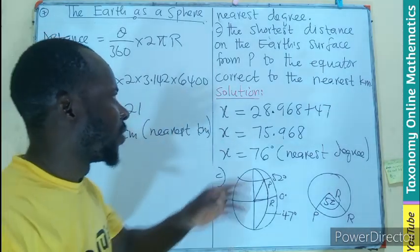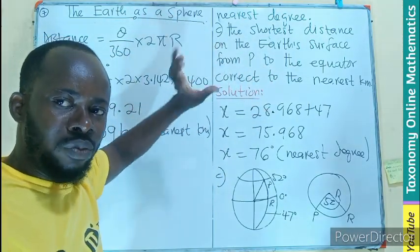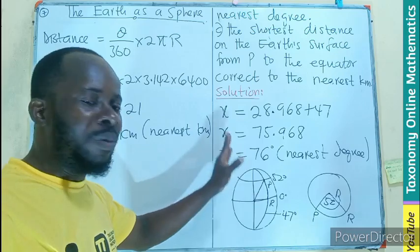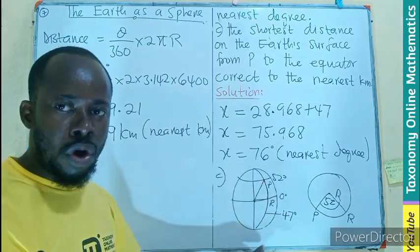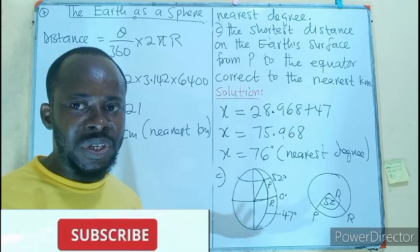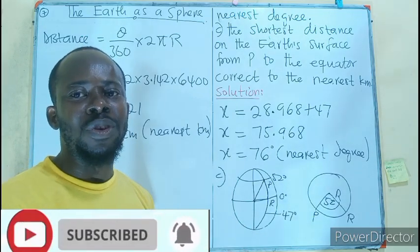Alright. Take note of this question carefully. That this one is not going to be the small circle, but rather it's going to be a great circle because it is having a common longitude. I believe this question is also well accepted by you. Like, share, comment and subscribe.